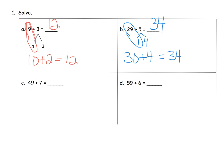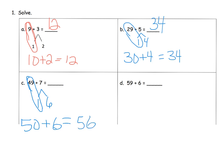So 49 plus 7: well, 49 is pretty close to 50, so I'm going to decompose the 7 to be 1 and 6. So 49 plus 1 is 50, and 50 plus 6 is 56.